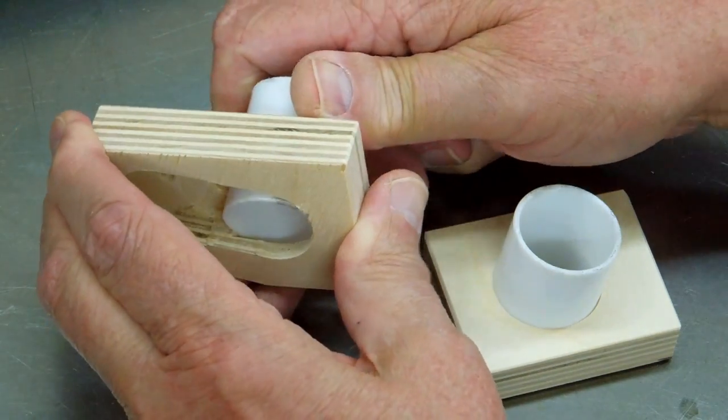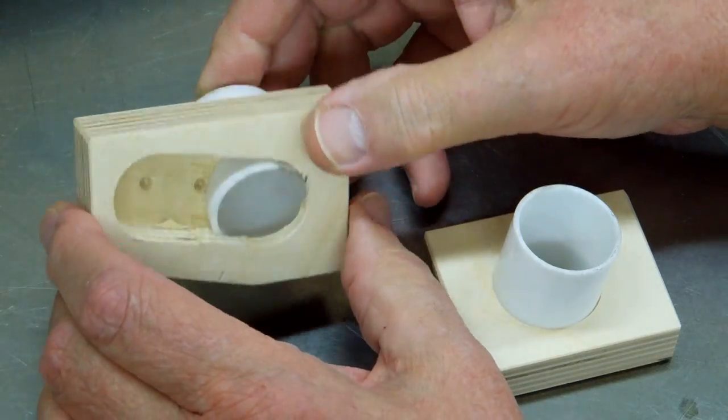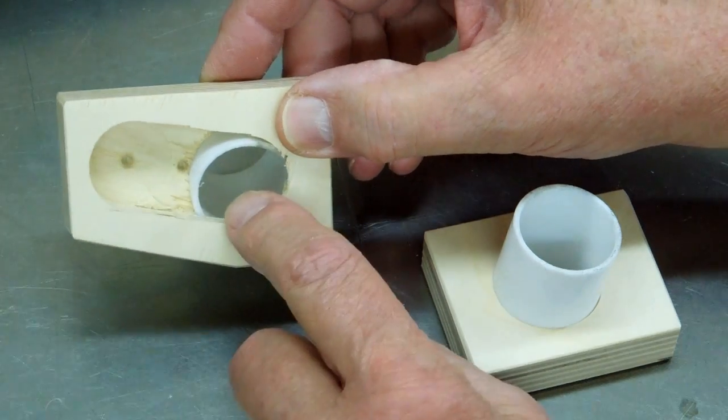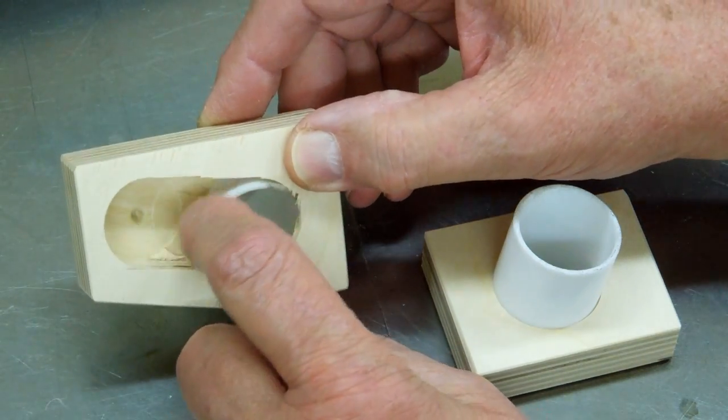I'm going to glue that piece of plastic in there with just regular PVC cement. It'll grip onto the plastic and it will grip onto the wood as well. And I will clean out this excess plastic with a dremel tool.